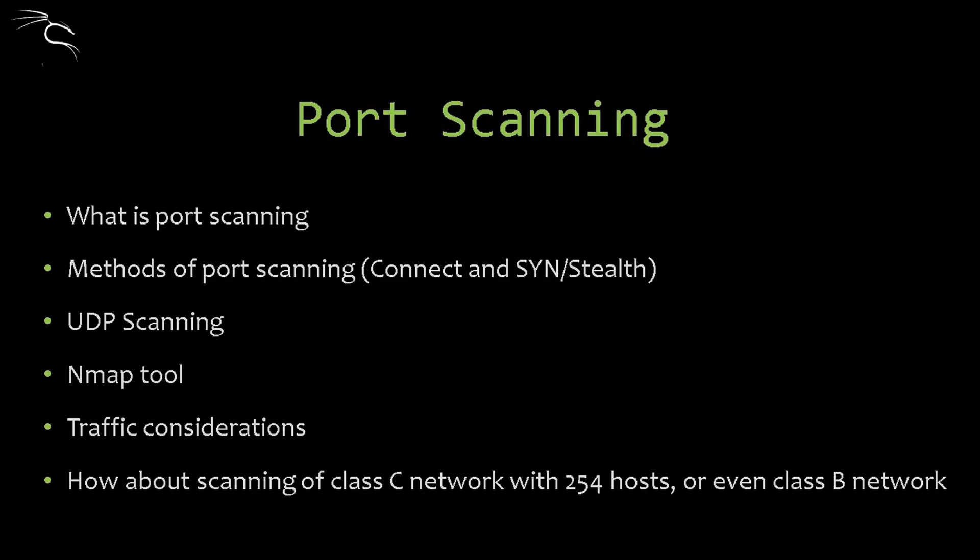The default nmap TCP scan will scan the 1000 most popular ports on a given machine. Consider the amount of traffic you are generating — this default 1000-port scan can generate up to 70 kilobytes of traffic. Scanning all 65,535 ports on a machine will generate around 4 megabytes of traffic, just for a single host.